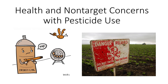Pesticide applications can pose potential hazards for people and non-target organisms. When selecting a pesticide, it is important to consider how people could be exposed to it and the various methods available to reduce that exposure. Likewise, direct and indirect impacts on wildlife and beneficial organisms and the means to reduce these impacts must be adequately considered.